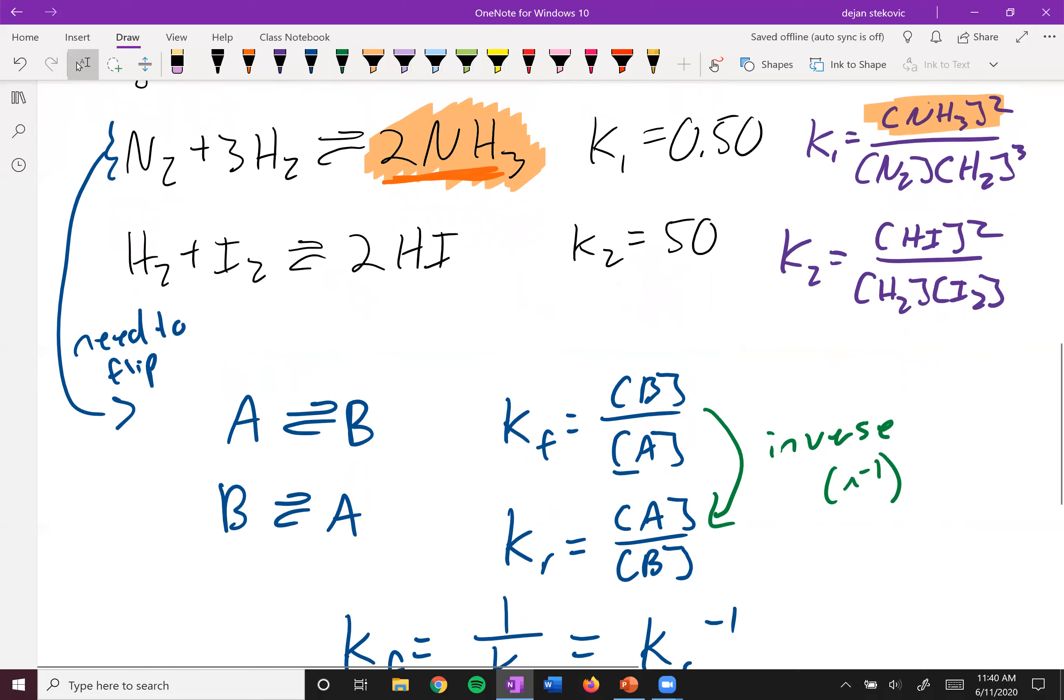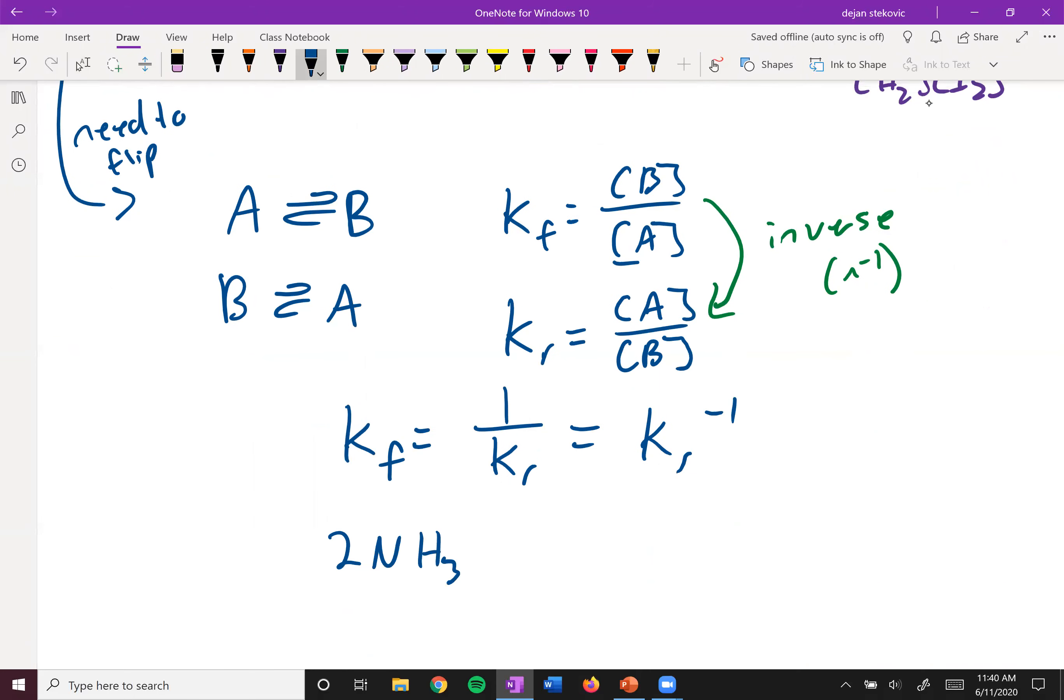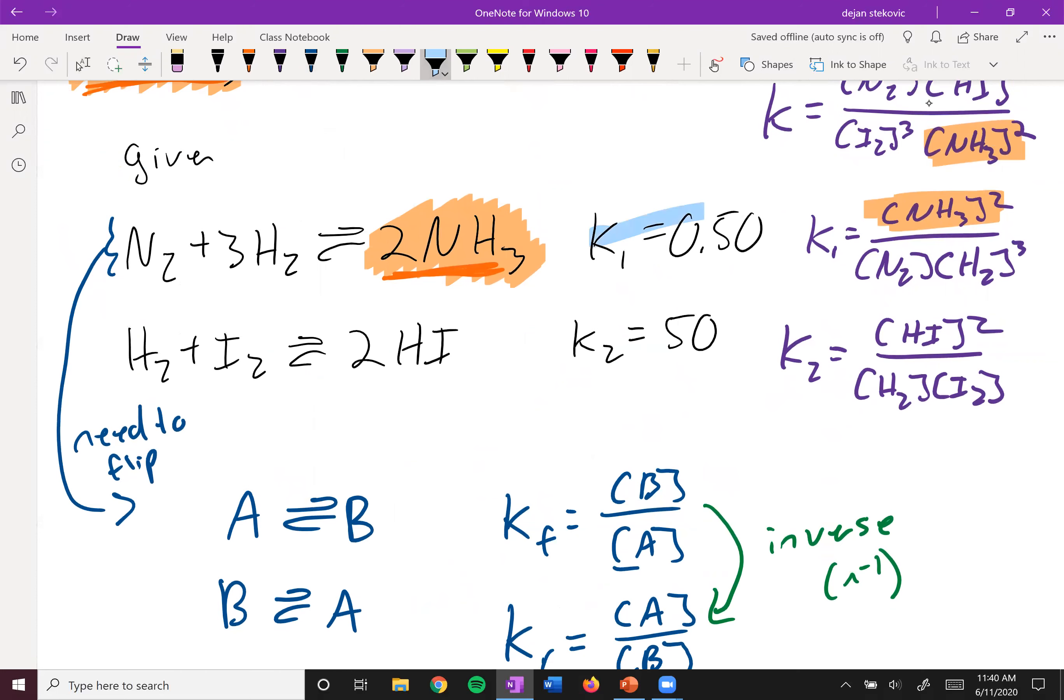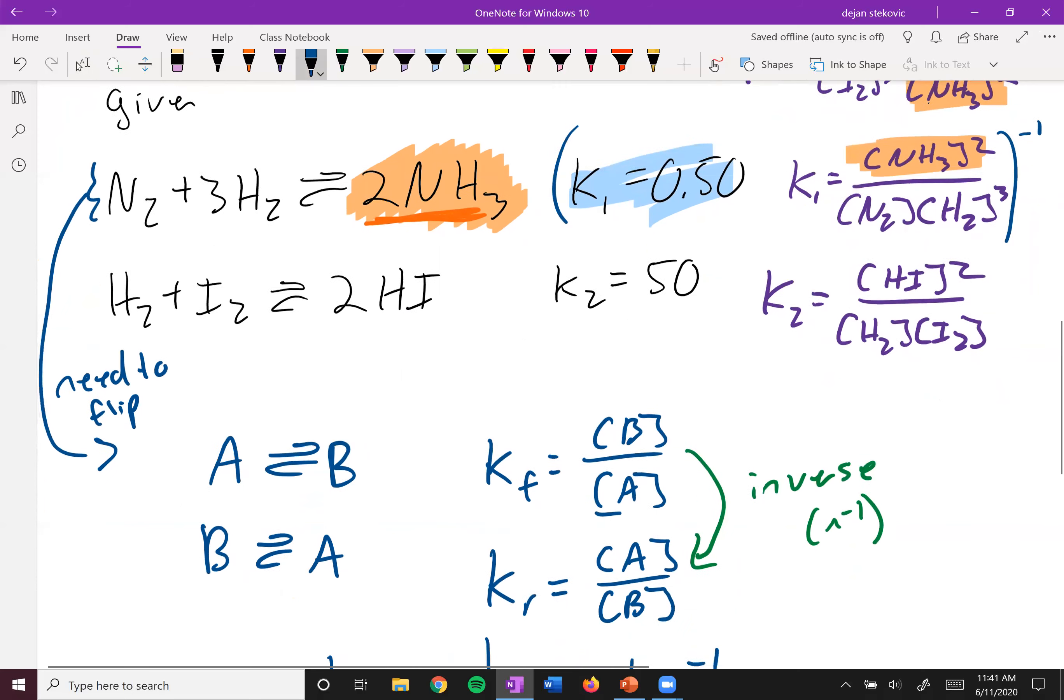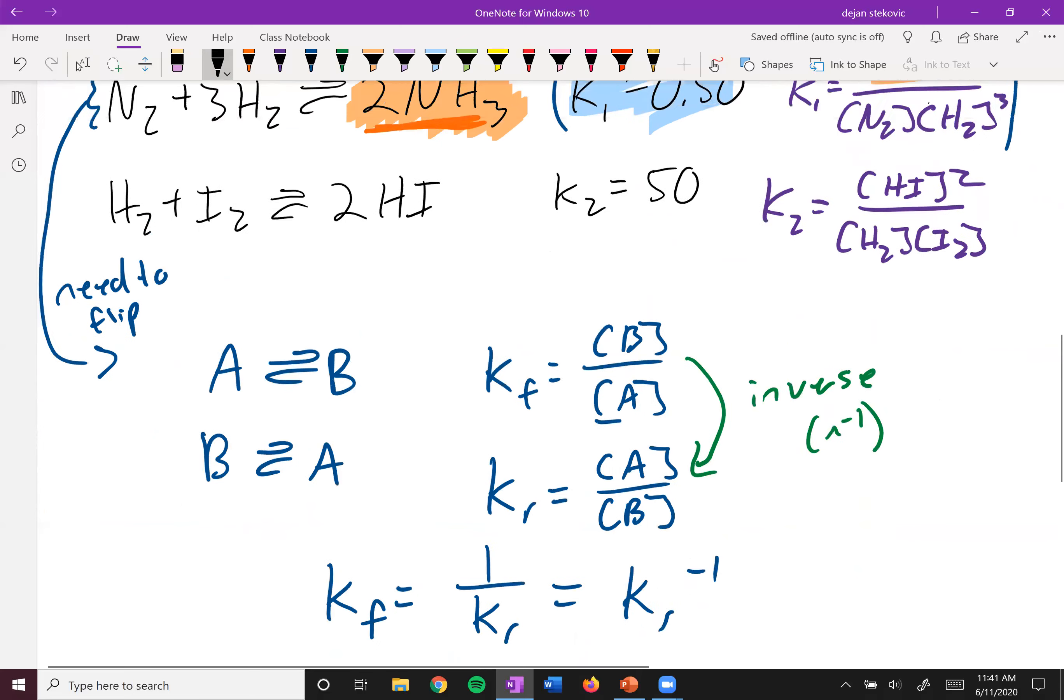And so if we take a look at our equation, we're going to flip this guy right up here. So now we'll have 2NH3 going to N2 and 3H2. And we'll have to do the same thing for this value of K1. So we're going to take all of this, raise it to the negative one. So we'll say K1 to the negative one. So that's 0.5 to the negative one, or one divided by 0.5. And so it gets a value of two. So we solved that part of the equation.